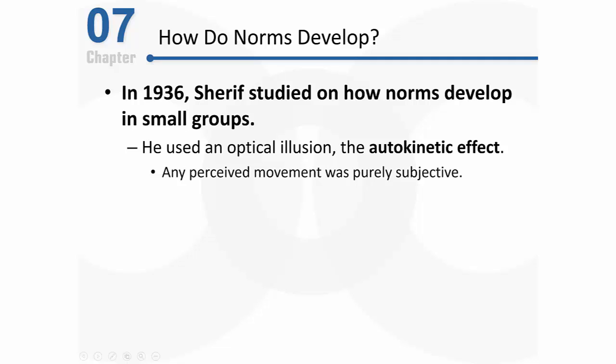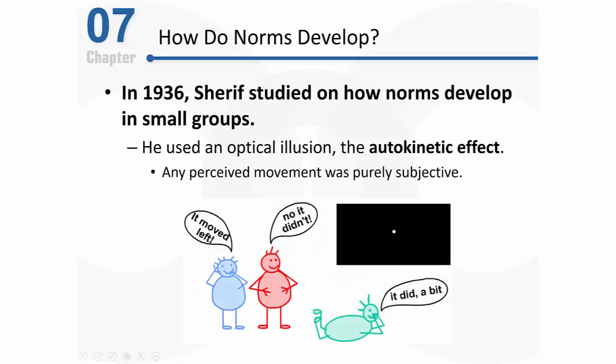Any movement perceived is purely subjective because the dot isn't moving at all. Sherif placed people in groups to observe the dot on a wall, and each group member was asked individually how much the dot moved. The first person might say five inches, another four, another five. The group then went through a series of trials where they were asked again how far the light moved.